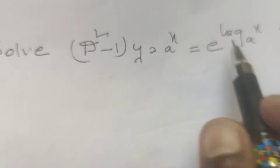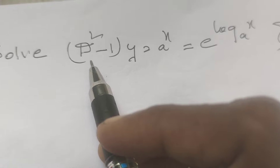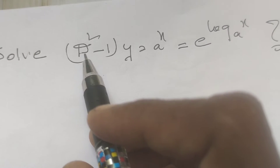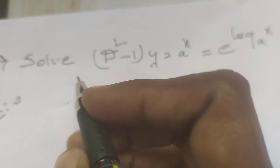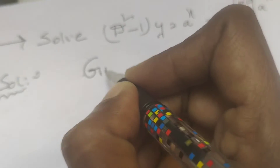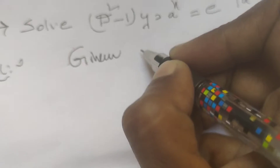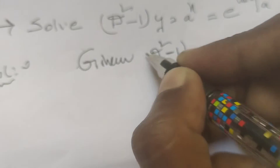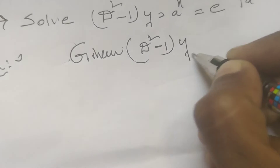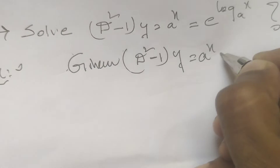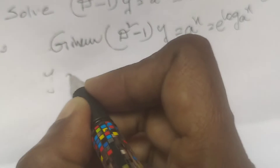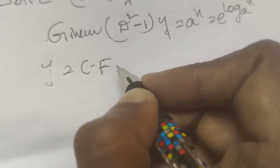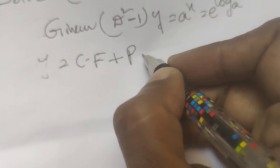We are solving the solution using operator form — the given problem is also in operator form. The solution means y equals the complementary function (CF) plus the particular integral (PI).